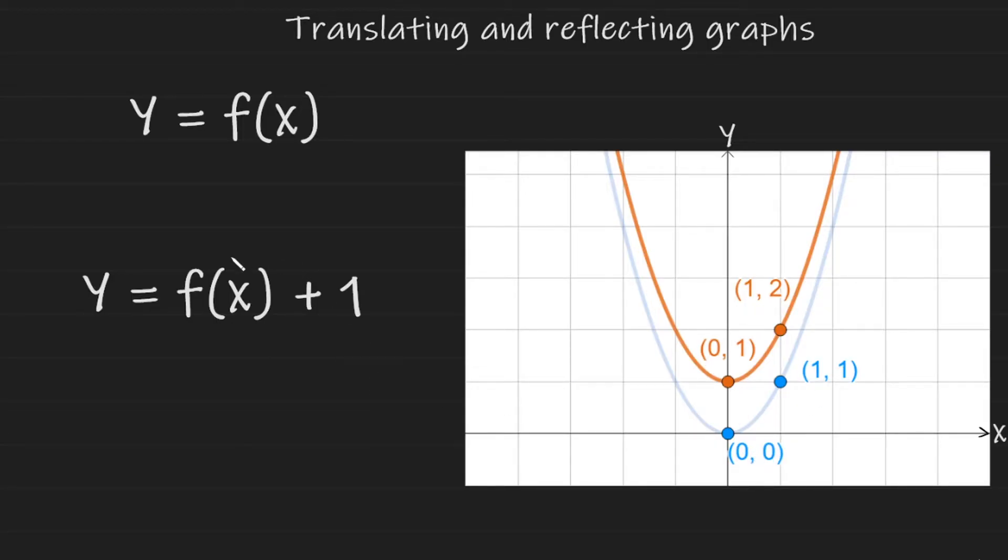So we can conclude that adding or subtracting to the outside of the function moves the entire graph up or down. Adding moves the graph up, subtracting moves the graph down.